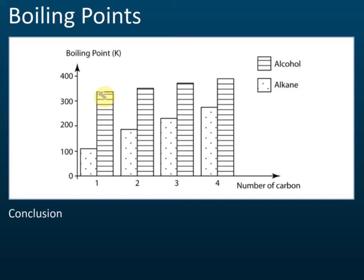From here, there are two things you need to know. First, we can see that when the number of carbons increases — one, two, three, four carbons — the boiling point increases. That's the first thing to know when comparing to alkanes.